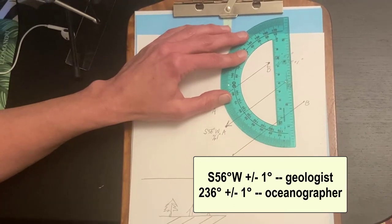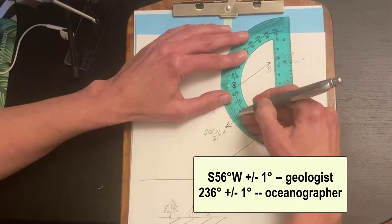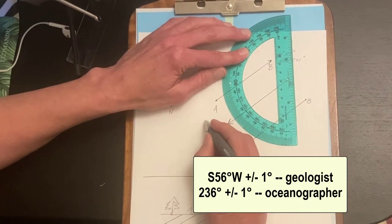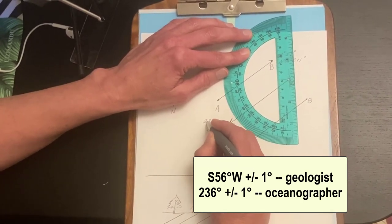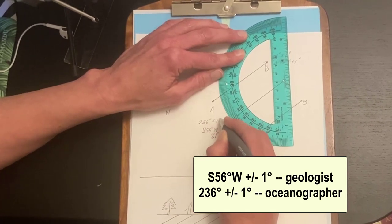How would an oceanographer say that? Well, it'd be 180 plus 56. 180 plus 56 is 236 degrees plus or minus one degree.